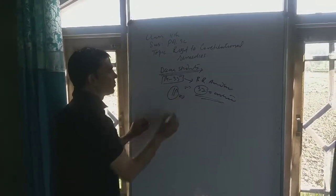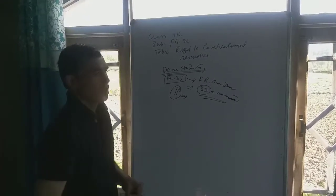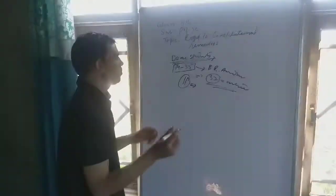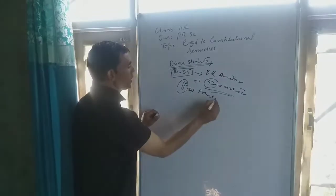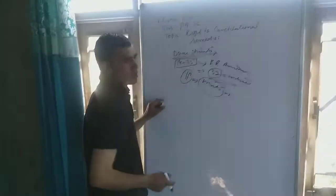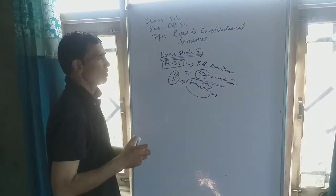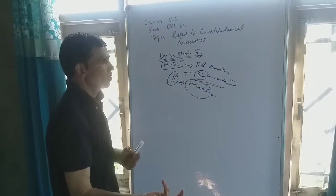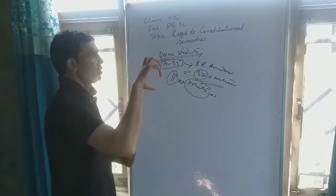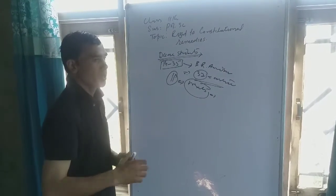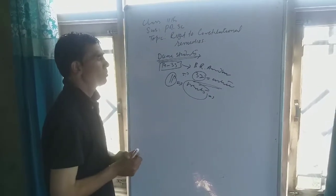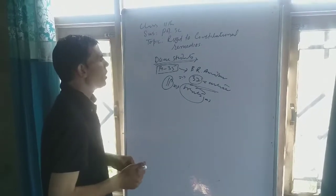And High Court or Supreme Court can issue some writs which you know that are writs of habeas corpus, mandamus, certiorari, prohibition, and quo warranto, and once fundamental rights are protected by issuing these writs.